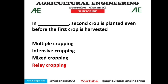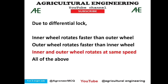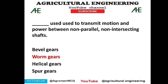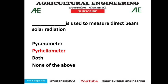In relay cropping, the second crop is planted even before the first crop is harvested — relay means passing the baton before the first crop is harvested, so option is relay cropping. Due to the differential lock, the inner and outer wheels rotate at the same speed. When the differential is unlocked, inner and outer wheels have different speeds — it is a tricky question, option C is correct.